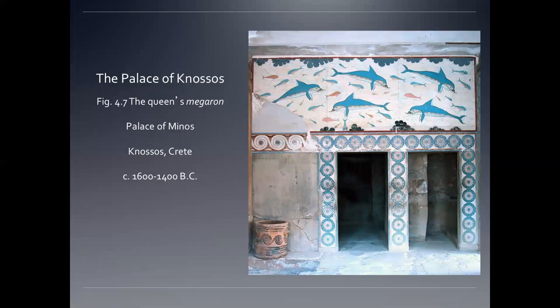The cool thing about fresco is that if you want to change the painting, you can just put another layer of plaster up and paint into that. What's even cooler for archaeologists is that when one layer cracks off — like we can see with these rosettes and swirly ones — both layers of paint are preserved, and you can see what people had done previously.